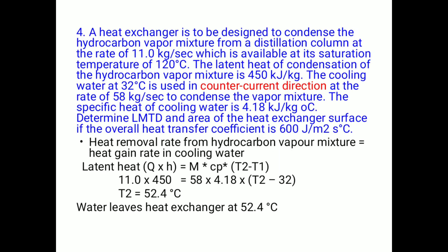Numerical 4: A heat exchanger is to be designed to condense a hydrocarbon vapor mixture from a distillation column at 11 kg/s, available at its saturation temperature of 120°C. The latent heat of condensation is 450 kJ/kg. Cooling water at 32°C flows in the counter-current direction at 58 kg/s. Specific heat of water is 4.18 kJ/kg·°C. Determine LMTD and heat exchanger area if U = 600 J/m²·s·°C.